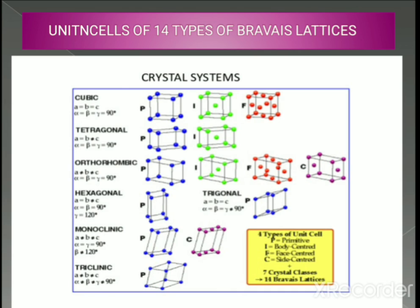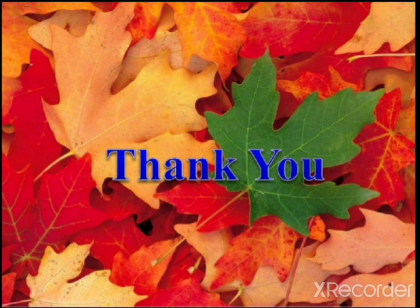In the notation used: P indicates primitive (simple cubic) — all lattice points at the corners; I indicates body-centered — eight lattice points at the corners and one at the center of the body; F indicates face-centered — lattice points at eight corners and at the center of all six faces; C indicates end-centered — one constituent particle at the center of any two opposite faces. This covers all about the seven primitive unit cells and their 14 Bravais lattices.